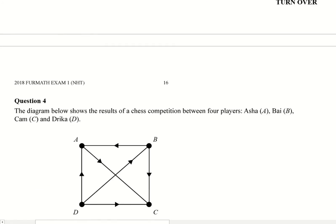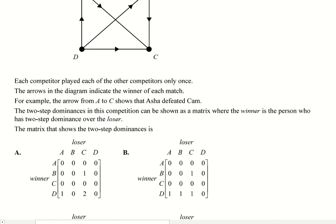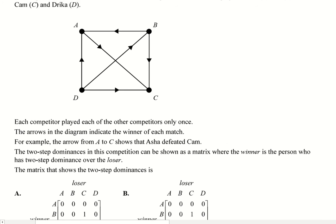The diagram below shows the results of a chess competition between 4 players: Asher, Bae, Cam, and Dryker. Each competitor played each of the other competitors only once. The arrow in the diagram indicates the winner of each match. So for example, Dryker beats Asher. So that's how you'd read that. The two-step dominance in this competition can be shown as a matrix where the winner is a person who has a two-step dominance over the loser.